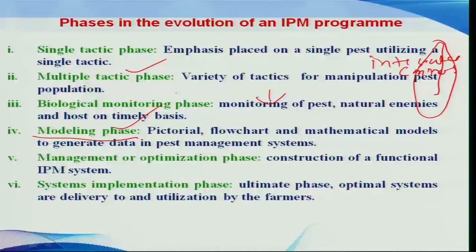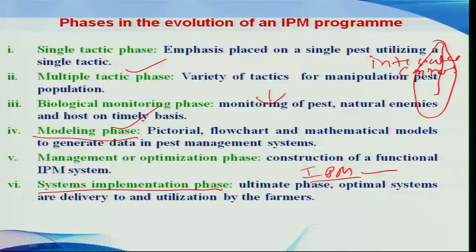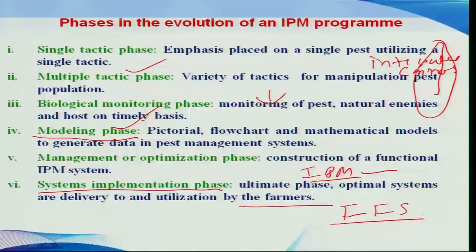After utilizing all available techniques, data, survey and surveillance, scientists constructed different IPM systems for different crops. The ultimate phase is the systems implementation phase, where IPM programs must be implemented at the farmers' level so farmers can be benefited. In that context, various programs exist, among them FFS — Farmer Field Schools — described as schools without four walls, where the farmer is trained in different tactics utilized for the pest management program.